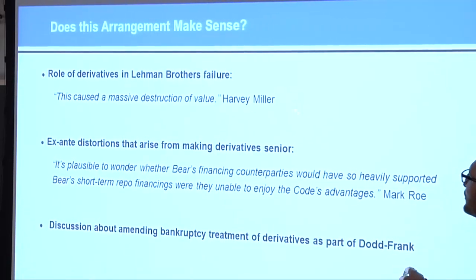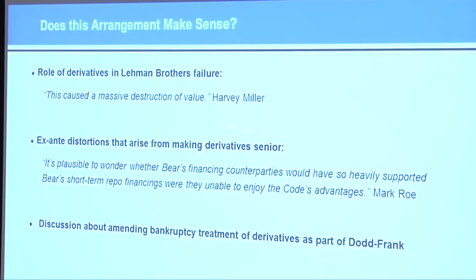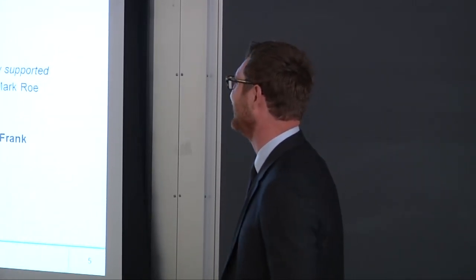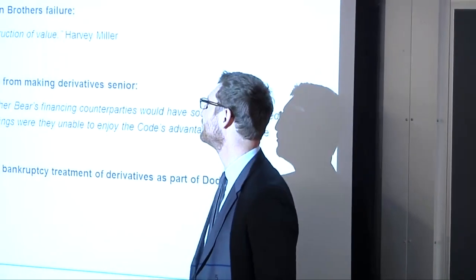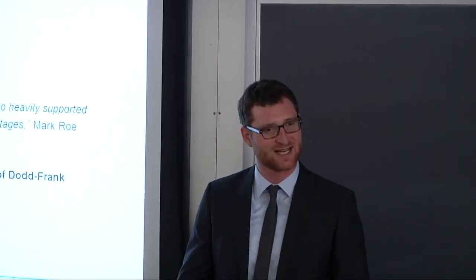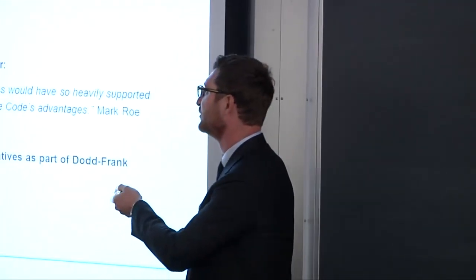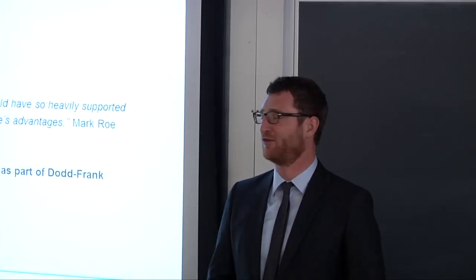The first quote is from Harvey Miller, a bankruptcy lawyer at Weil Gotshal who ran the Lehman Brothers bankruptcy. He referred to the collateral calls just on the eve of bankruptcy in his report on Lehman Brothers, saying this caused massive destruction of value because it led to an outflow of capital from the firm right on the verge of bankruptcy. Once a firm is in trouble, the rules we have in place might lead to serious problems.